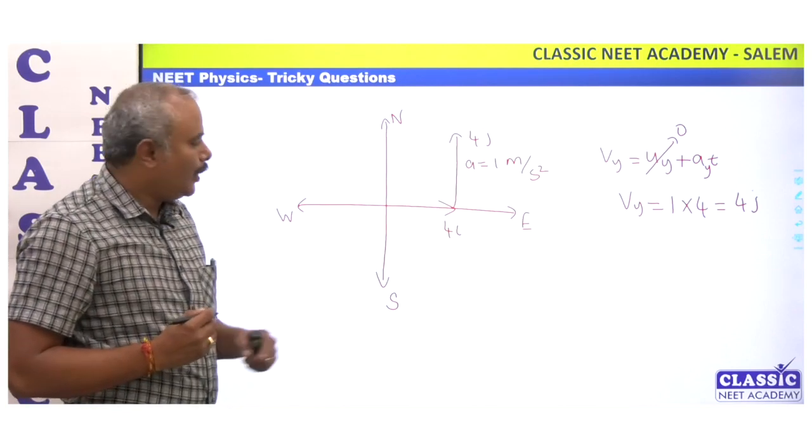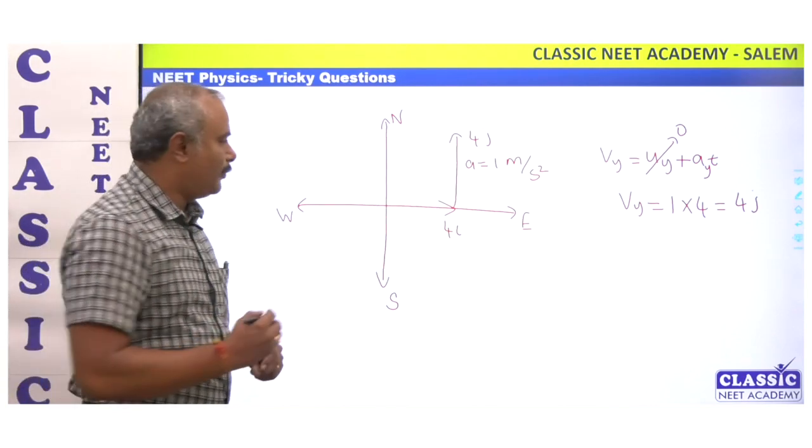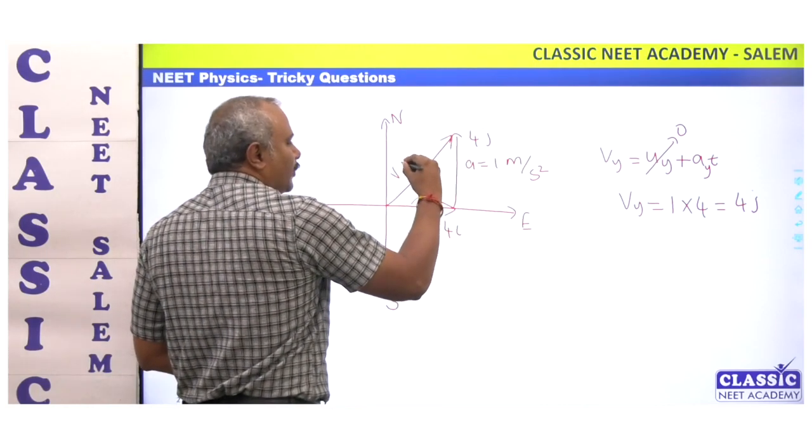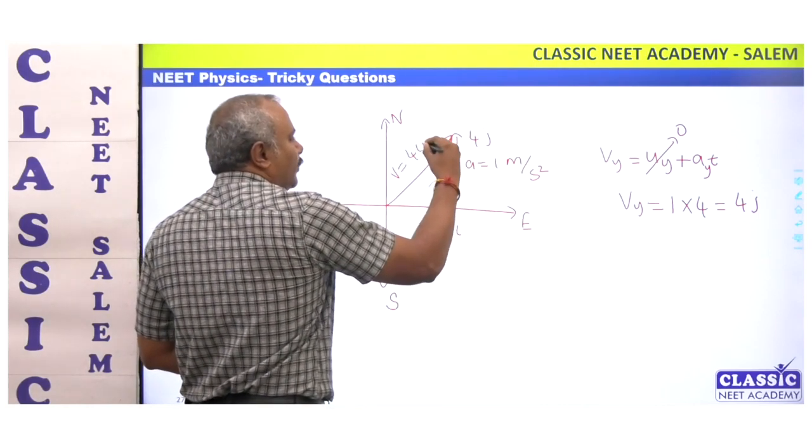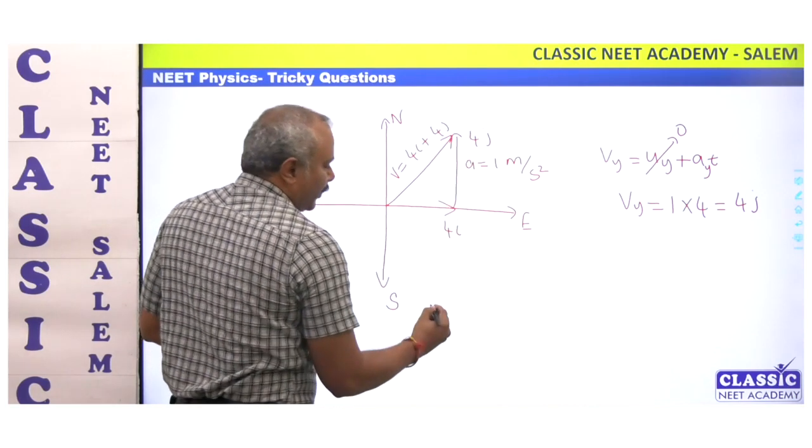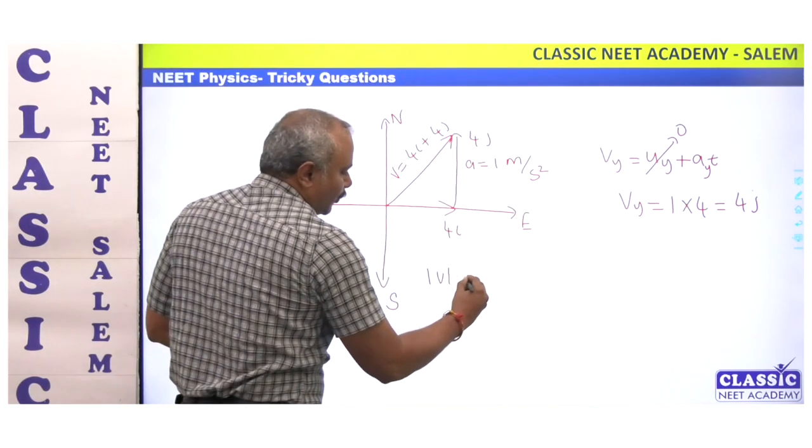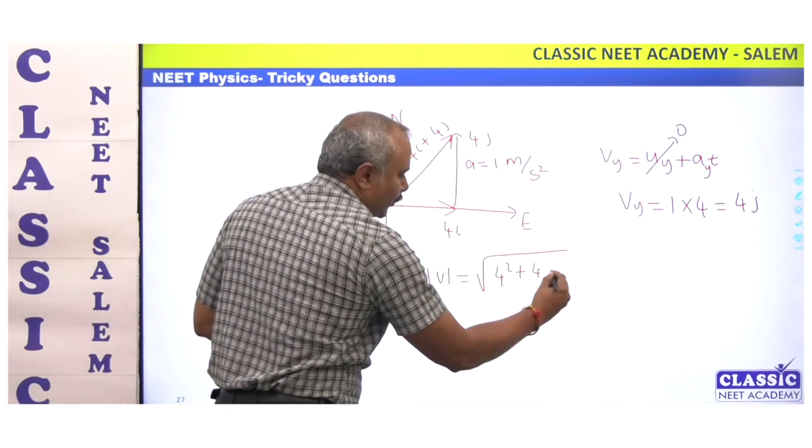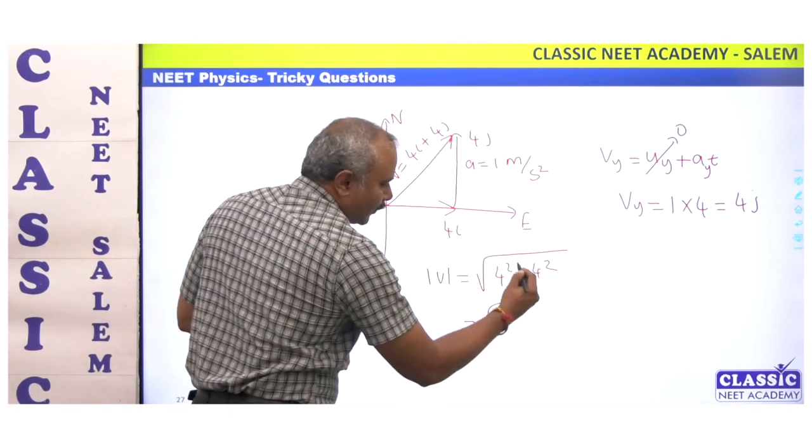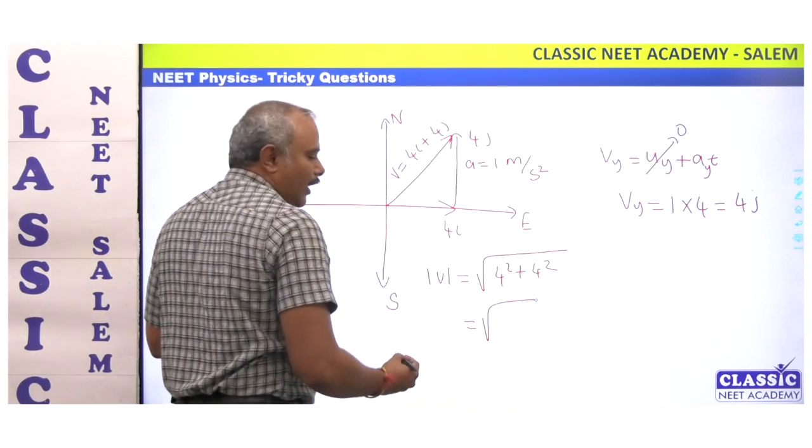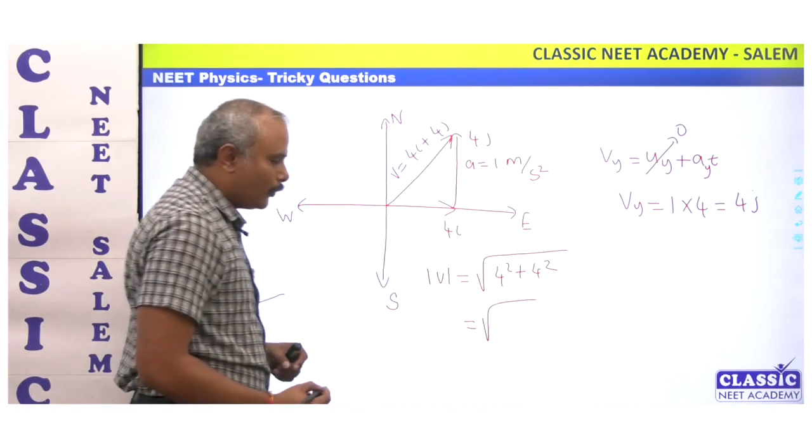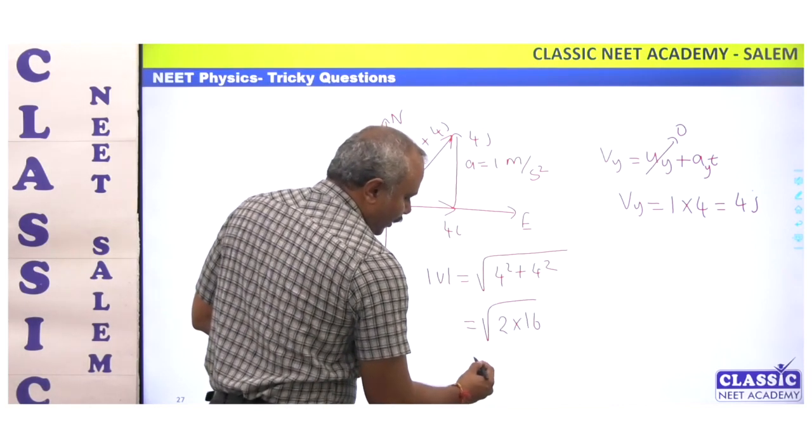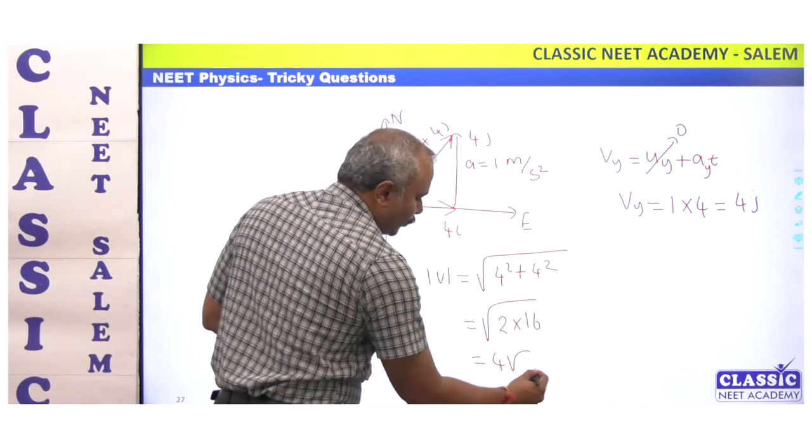Now total velocity is 4i plus 4j. The resultant velocity v equals 4i plus 4j. The modulus of v equals root of 4 squared plus 4 squared, equal to root of 16 plus 16, which is 2 into 16, giving us 4 root 2.